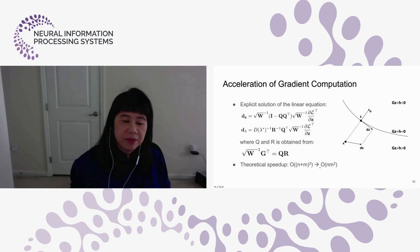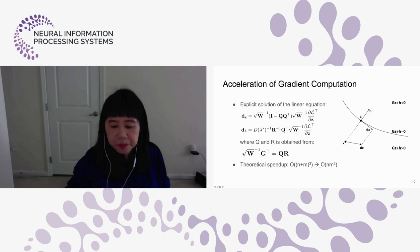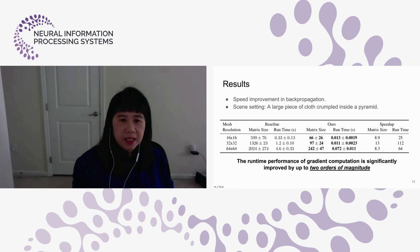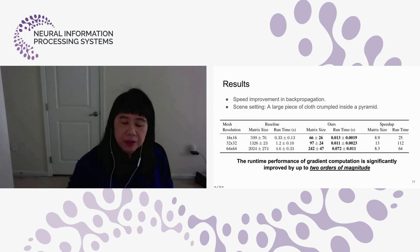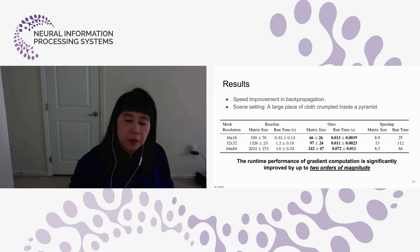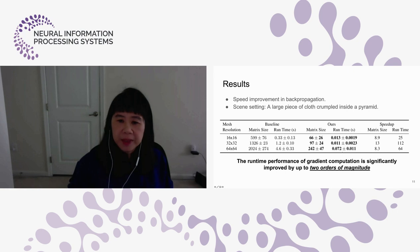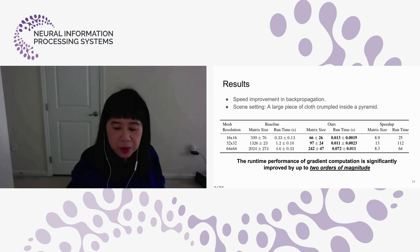This QR decomposition gives a theoretical speedup from order n-cubed to order n times m-squared. With mesh resolutions ranging from 16×16 up to 64×64, the matrix size reductions are significant. This leads to an overall running time speedup of about two orders of magnitude, comparing our approach with QR decomposition against the baseline system.